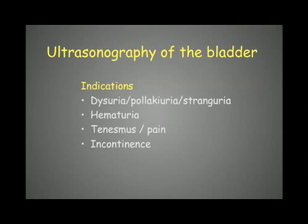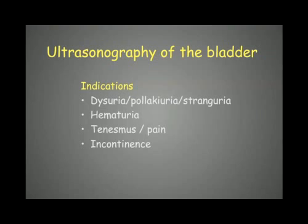Now we go to the ultrasonography of the bladder. For the indications, we have different clinical signs that can be suspicious of a bladder problem: dysuria, polycuria, stranguria, or immaturia. We can also have in some cases tenesmus, pain, and some incontinence as well.